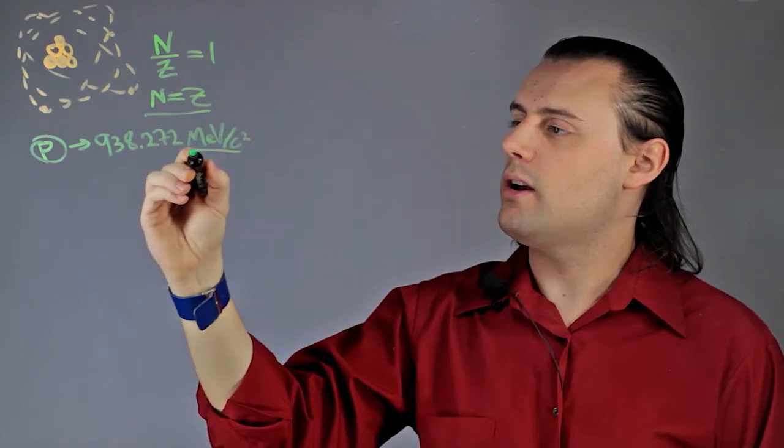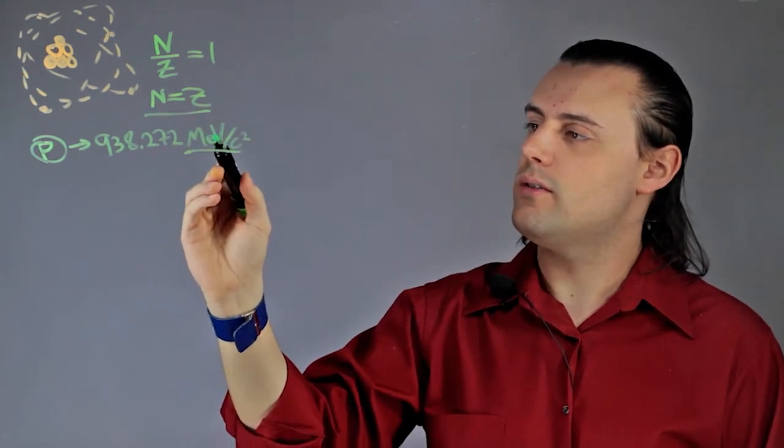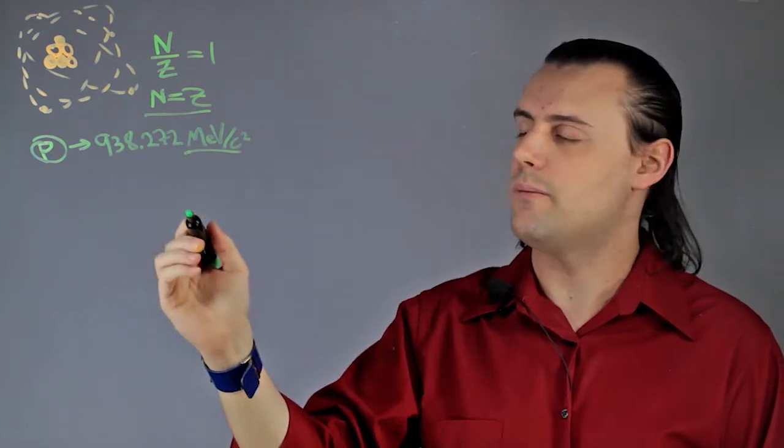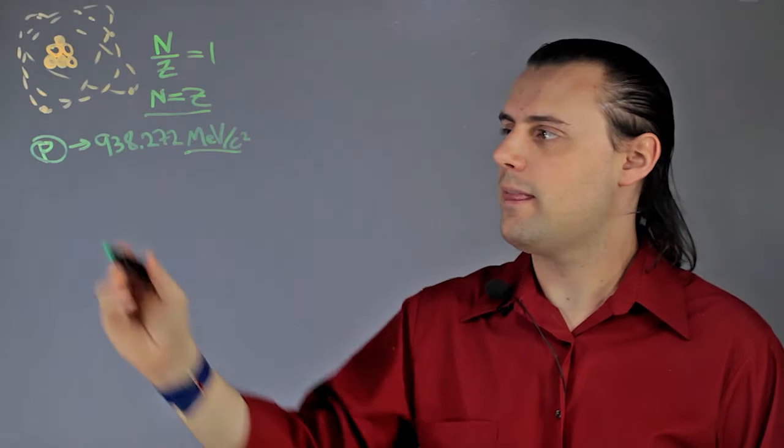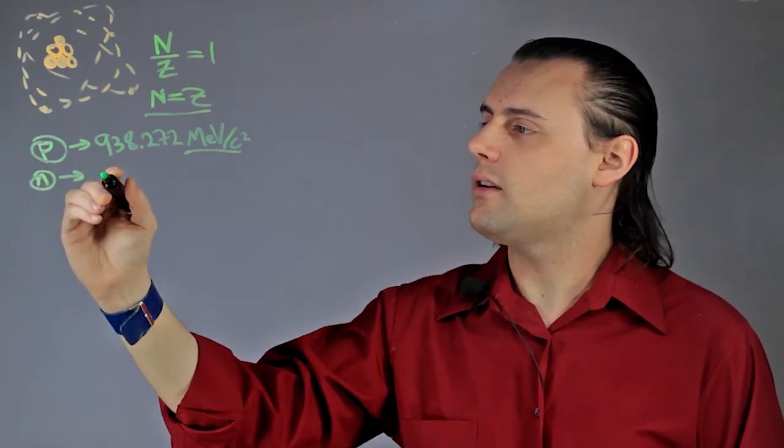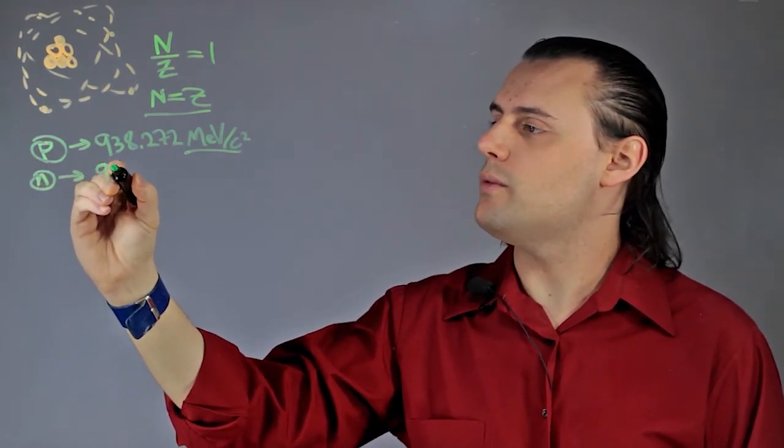Where here I'm using units of energy of electron volts for the rest mass of a proton from the equation E equals mc squared. A neutron has a slightly larger mass,